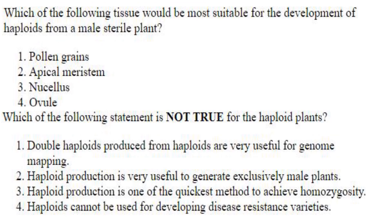Which of the following tissues would be most suitable for the development of haploids from a male sterile plant? A male sterile plant has no pollen or anthers, so pollen grains cannot be used. Apical meristem and new cells also cannot give rise to haploid plants, but ovule can. Answer is option 4.